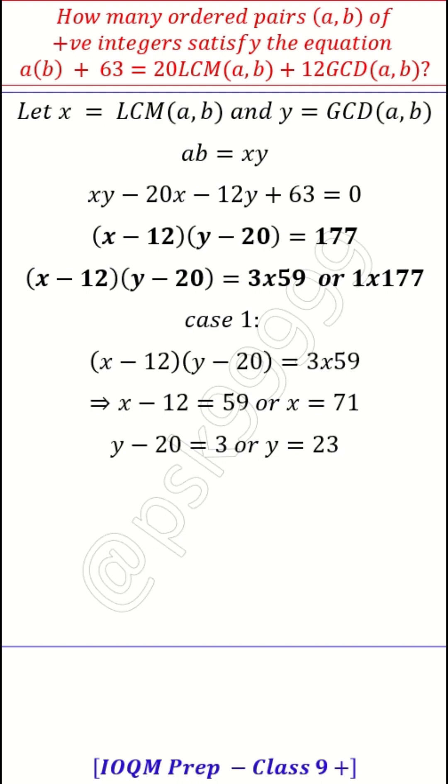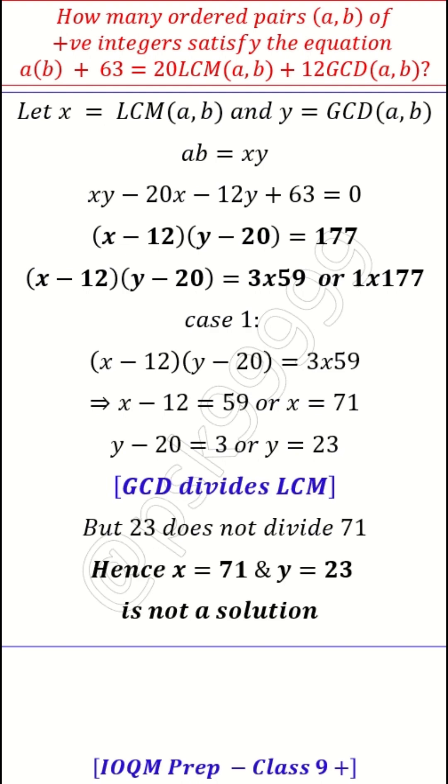x is a LCM, y is GCD, both of same numbers. So GCD always divides LCM. LCM is a bigger number or equal. So GCD always should divide LCM. But in this case, 71 is not divisible by 23. So which means this is not a solution. x = 71 and y = 23 is not a solution.